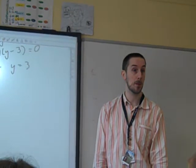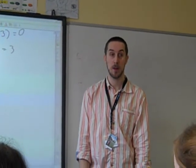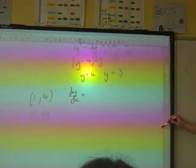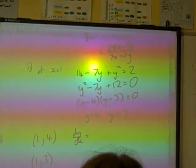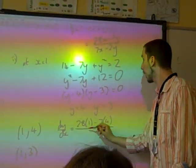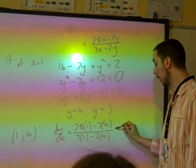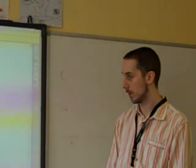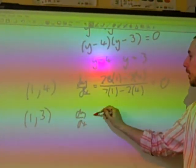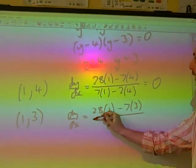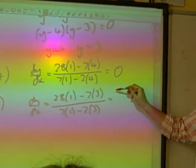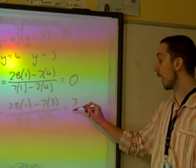Now we also need to know the gradient, because we're talking about tangents at these points. dy/dx, which we already found. Our expression for it included x's and y's, but that's okay because we know what x and y are. So this is (28(1) minus 7(4)) over (7(1) minus 2(4)), which is 0. And this one would be (28(1) minus 7(3)) over (7(1) minus 2(3)), which is 7 over 1, so 7.